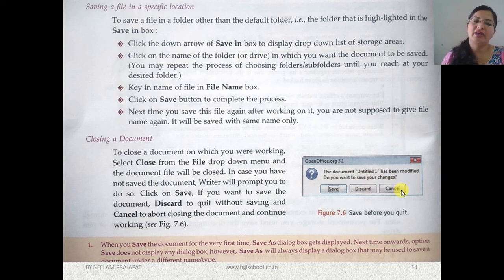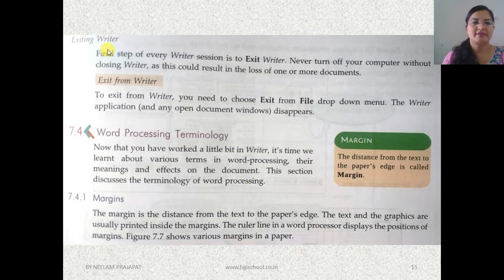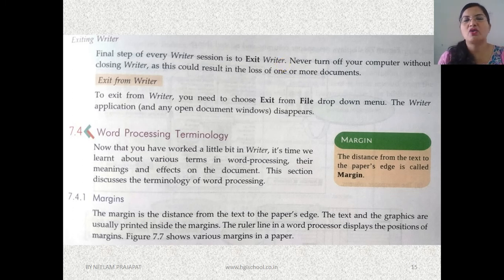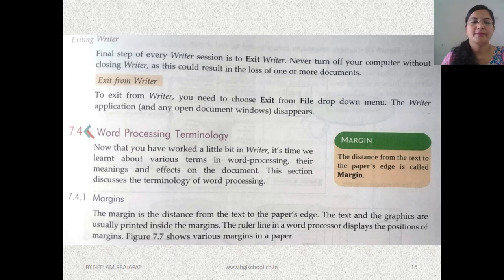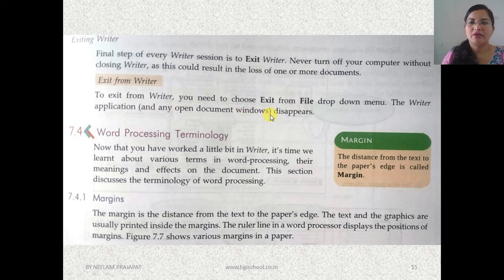Exiting Writer: the final step of every Writer session is to exit the application. Once you have created a document, you can close it using the Close option in the File menu, but the Writer application will still remain open. To exit Writer completely, choose Exit from the File drop-down menu, and the Writer application will close.